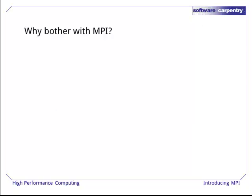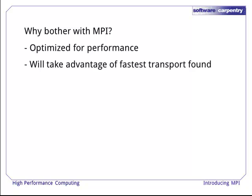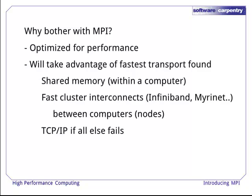So, if message passing is just sending and receiving messages between computers, why do we bother with MPI? This just sounds like network communications, and there are already dozens of libraries out there to handle such things. First, the MPI interface is designed and implemented with performance in mind. Secondly, the MPI interface will take advantage of the fastest network transport available when sending messages — using shared memory within a node, or fast interconnects like InfiniBand or MirNet within a computer cluster, and only if all else fails will it use the standard internet TCP/IP. This represents a huge body of networking code for many interfaces and protocols that you don't have to implement yourself.